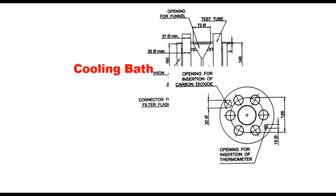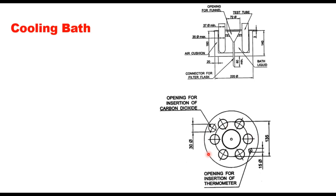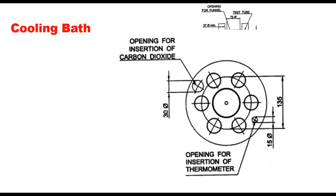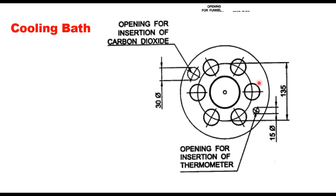You also need a cooling bath like this. This cooling bath has six test tubes — three test tubes of 38 mm diameter and 160 mm length with wash bottle head, and three test tubes of the same 38 mm diameter with spout and cork stopper. There is a small opening for insertion of a thermometer and a small opening for carbon dioxide.